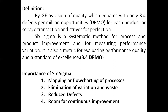Six Sigma is a systematic method for process and product improvement and for measuring performance variation. It is also a metric for evaluating performance quality and standard of excellence at 3.4 DPMO. Its importance lies in the mapping and flow-charting of processes, elimination of variation and waste, and reducing the defective rejection rate.